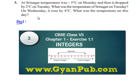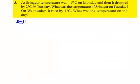Now we'll see the third problem. The question is: at Srinagar, temperature was minus 5 degrees Celsius on Monday, and then it dropped by 2 degrees Celsius on Tuesday. What was the temperature of Srinagar on Tuesday? On Wednesday, it rose by 4 degrees Celsius. What was the temperature on this day?